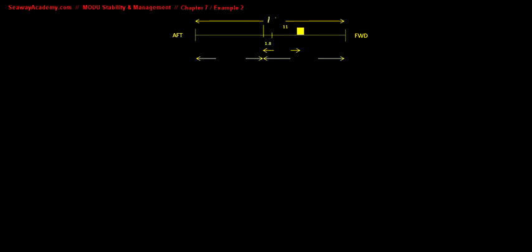Chapter 7 example 2 - new drafts. In a question like this, the first thing you should do is draw a diagram and calculate the distances from the center of flotation.